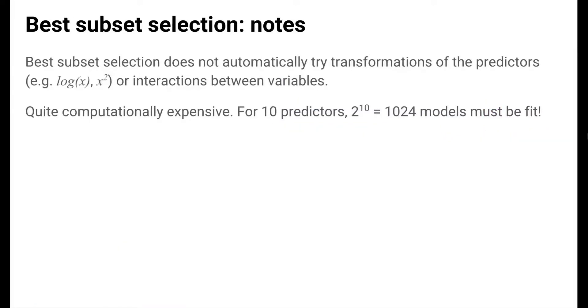Best subset selection is conceptually simple. It just tries all possible models formed from including and excluding variables. But note that it does not automatically try transformations of the predictors or interactions between variables, which can definitely be important. Another downside is that it is computationally expensive. With just 10 predictors, over a thousand models have to be fit. And as we get even more predictors, it quickly becomes impossible to even run best subset selection.